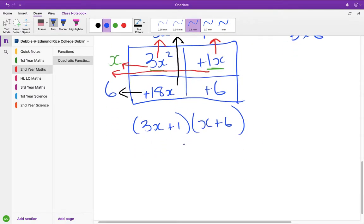We solve it, so you split the page. You take your 3x plus 1, and you let it equal 0, and you take your x plus 6, and you let it equal 0.